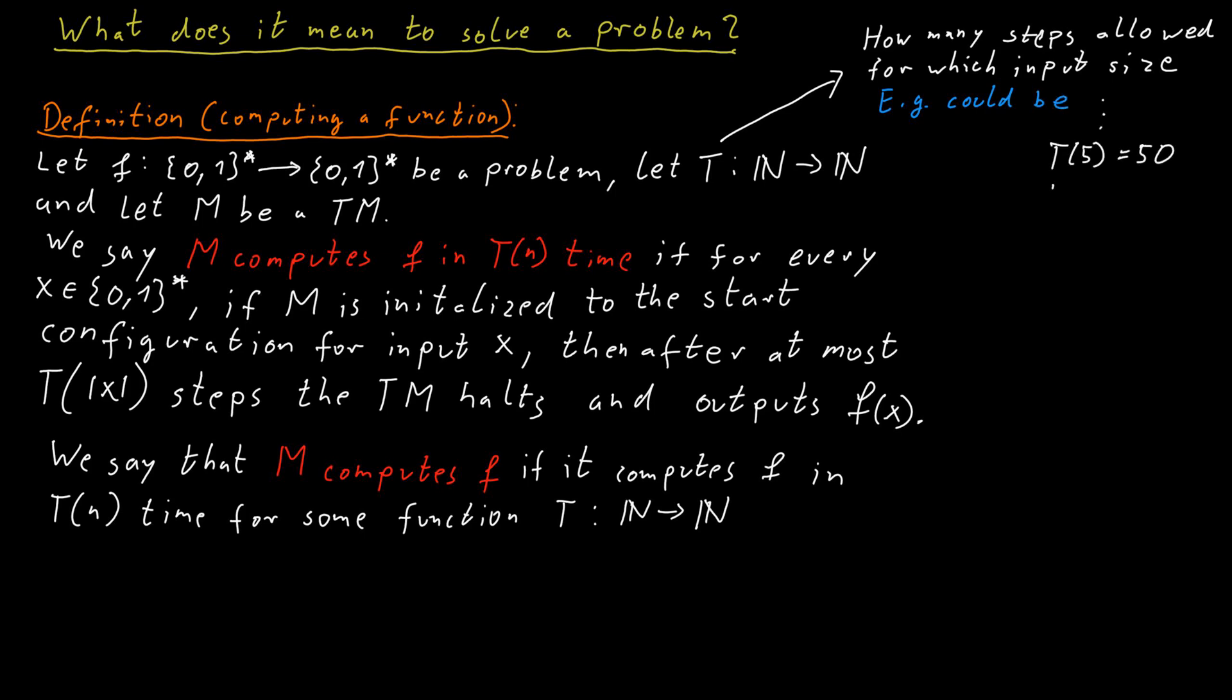But maybe if the input has length 10, we might allow up to 500 steps. And so this T(n) gives you the relationship between the size of the input and the number of steps that the Turing machine is allowed to perform.